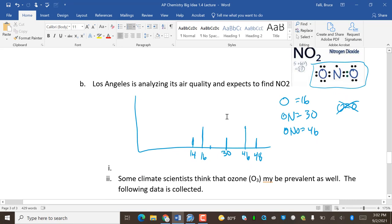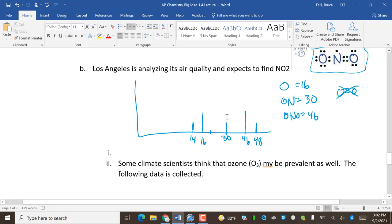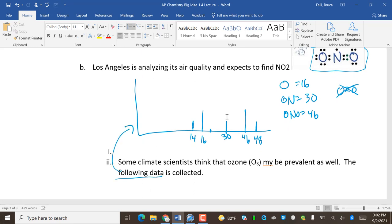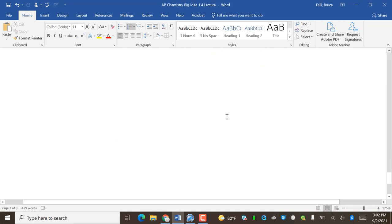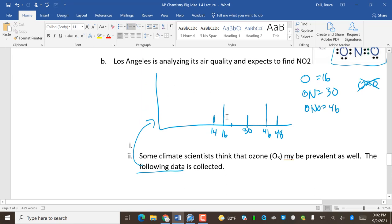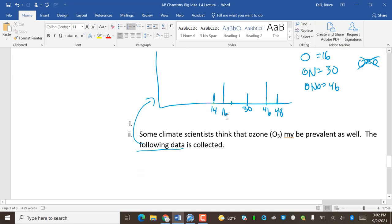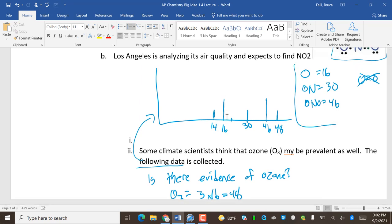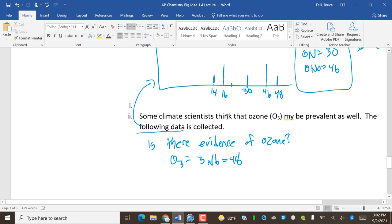Some climate scientists think that ozone may be prevalent as well. The following data has been collected. So my questions have disappeared a bit. So ozone is O3. Is there evidence of ozone? Ozone is O3. O3 is 3 times 16, which is 48. Is 48 reasonable from my NO2, a source of smog? Not really, especially not that big. Yes. Ozone is detected.